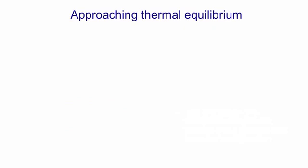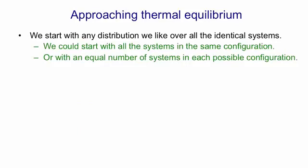Now we can understand what's happening as we approach thermal equilibrium. We can start with any distribution we like over all these identical systems. We could make them all be in the same configuration—that's a distribution with a probability of one on one configuration and zero on everything else. Or we could start them off with an equal number of systems in each possible configuration—that's a uniform distribution.